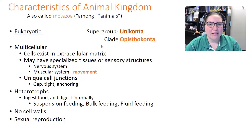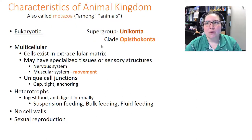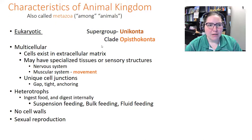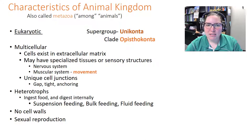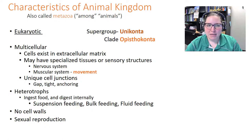Animals are eukaryotic, in the supergroup Unikonta and the clade Opisthokonta — which also includes fungi and some protists. Animals are multicellular, their cells exist in an extracellular matrix, and they may have specialized tissues like a nervous system and muscle system for movement.